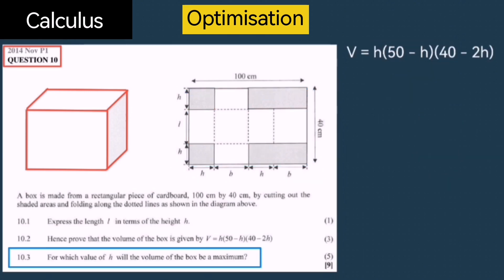The third question asks: For which value of H will the volume of the box be a maximum? For these maximum and minimum questions, well in this case it's maximum, all you need to do is take the derivative and make it equal to 0, then solve that variable. In this case we're taking the derivative of the volume with respect to the height and making that equal to 0.